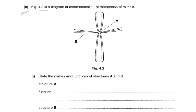Coming to part C of the question: figure 4.2 is a diagram of chromosome 11 at metaphase of mitosis. State the names and functions of structures A and B. Structure A is the centromere - it is the site of attachment of the chromatids to the spindle fibers, or you can say it holds the identical chromatids together.